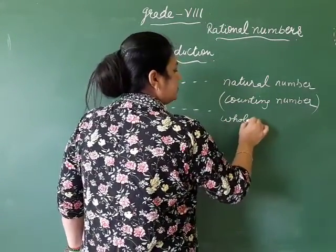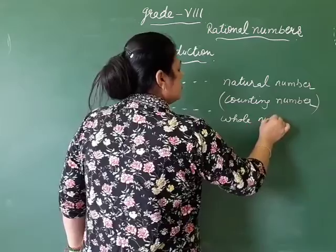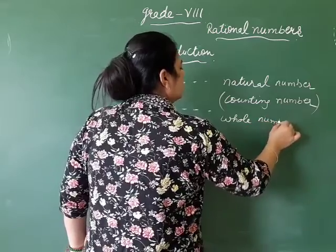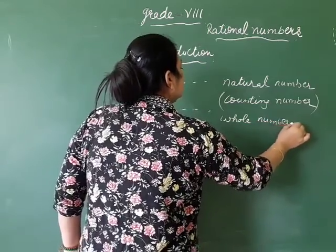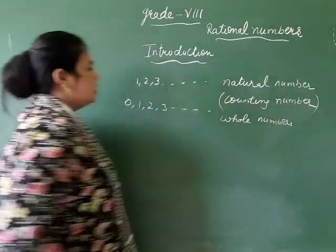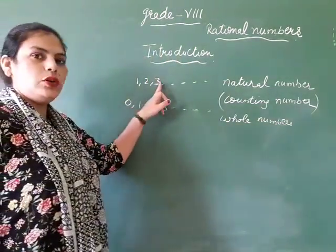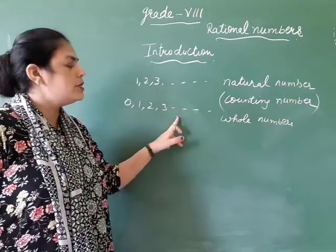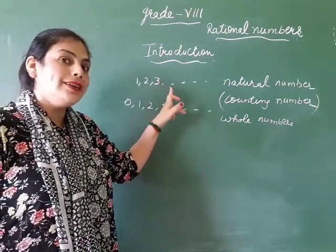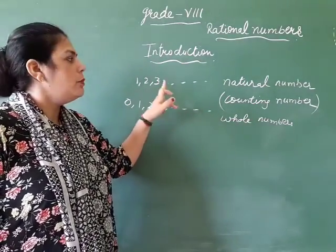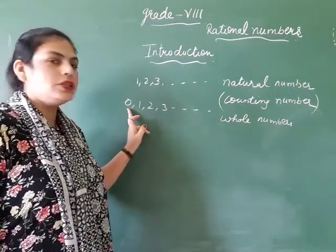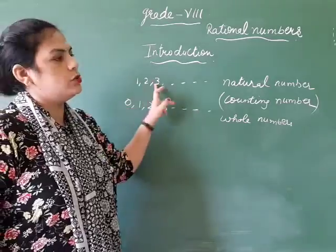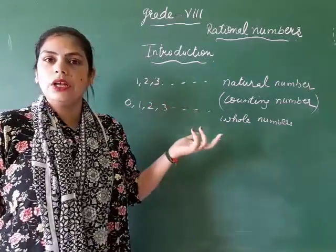That means natural numbers are also whole numbers, but whole numbers are not natural numbers, because whole numbers include zero and natural numbers do not include zero.